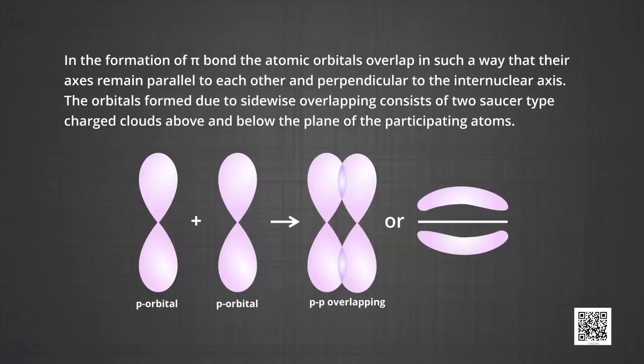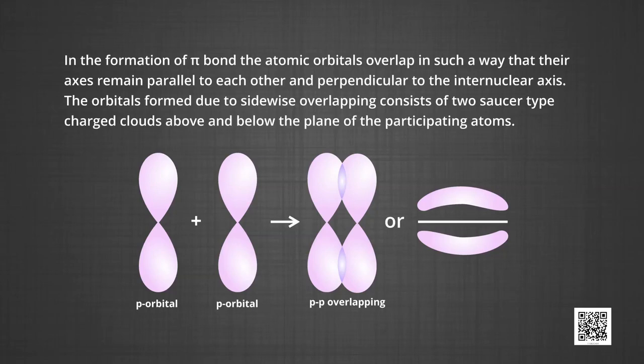In the formation of a pi bond, the atomic orbitals overlap in such a way that their axes remain parallel to each other and perpendicular to the internuclear axis. The orbitals formed due to sidewise overlapping consist of two saucer-type charge clouds above and below the plane of the participating atoms. The figure shows pi bond formation by p orbital overlapping — you can see the electron cloud above and below the plane of the atoms.